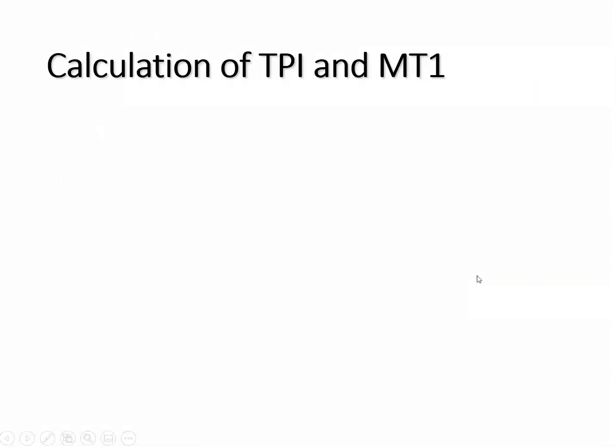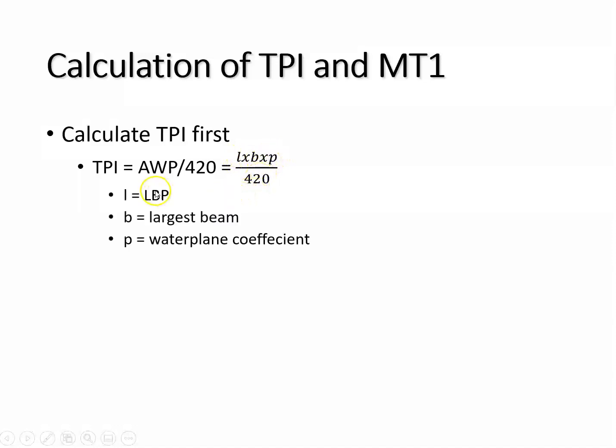Now we're ready to start doing some calculations for TPI, tons per inch immersion and moment to trim one inch. This is going to be for the blue pages. When you do this, you've got to calculate TPI first. Here's our formula. TPI is area of the water plane divided by 420. That's length times beam times P. P was that water plane coefficient that we talked about a couple slides ago. In these problems, you're going to be given an L, a B, and a P, and then you're going to divide that by 420. L is going to be the LBP, length between perpendiculars. B is going to be the largest breadth or beam of the vessel, probably somewhere in the middle. And then P is going to be the water plane coefficient.